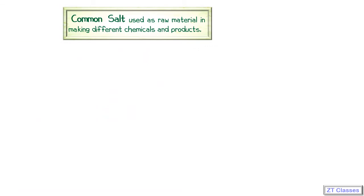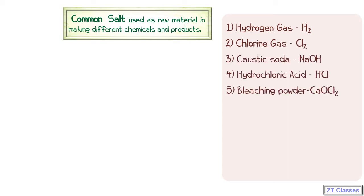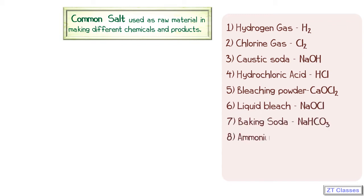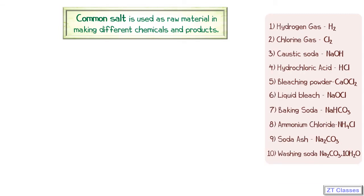Common salt is used as a raw material to obtain hundreds of products. The important ones are: hydrogen gas, chlorine gas, caustic soda, hydrochloric acid, bleaching powder, liquid bleach, baking soda, ammonium chloride, soda ash, and washing soda. This product list may seem lengthy, but all these products are obtained from just two reactions.